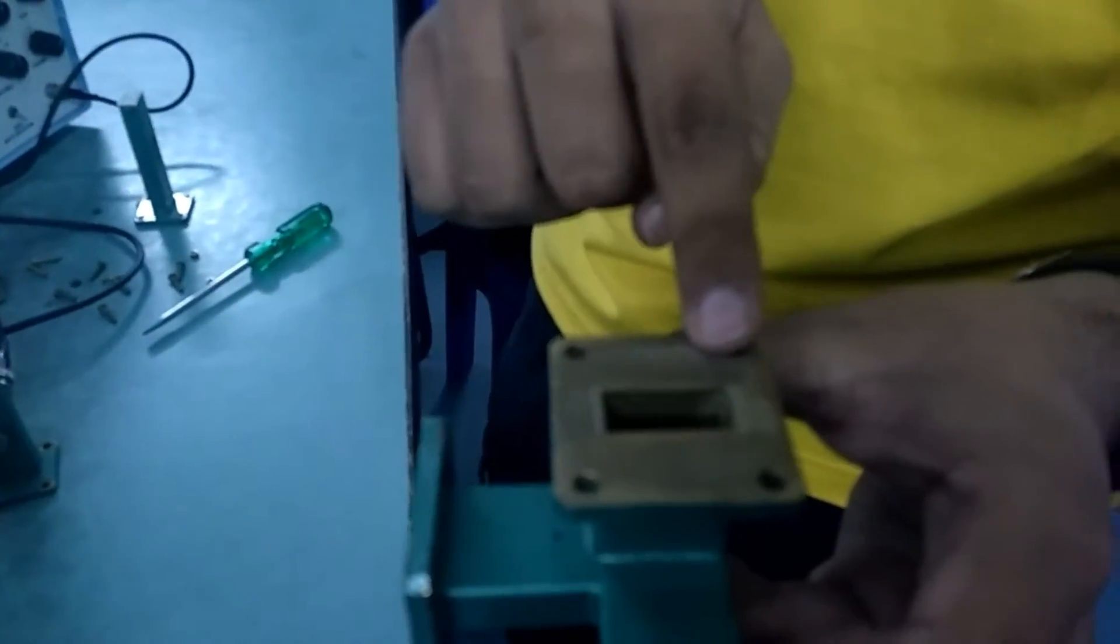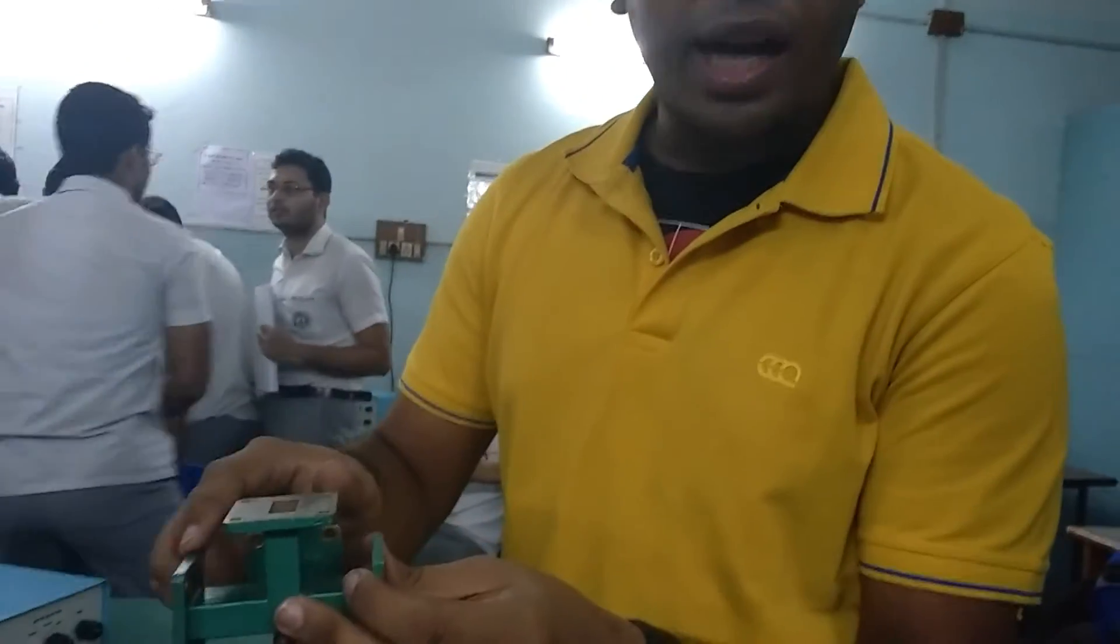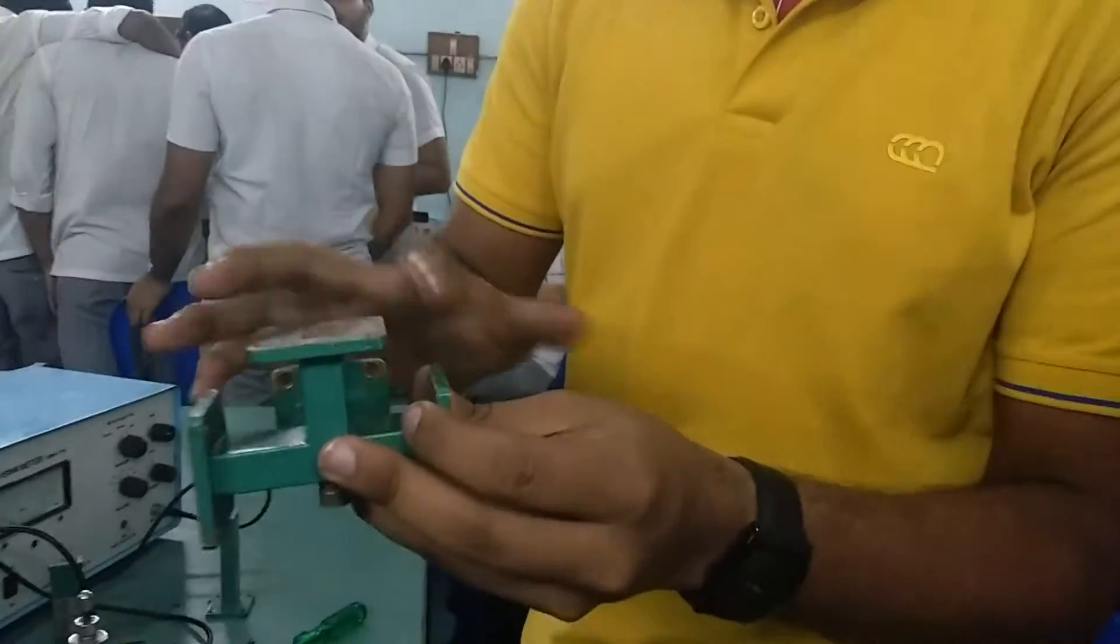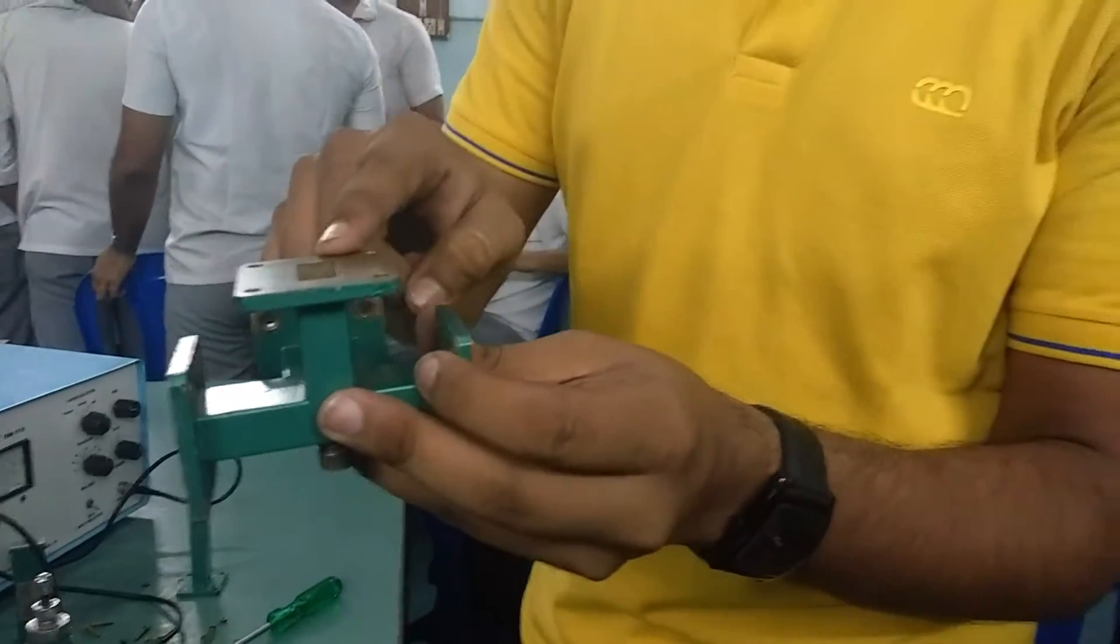This is the additive arm and this is the subtractive arm. If we input two signals as equal and opposite, equal phase and equal magnitude, we will get a zero output here and an additive output here.